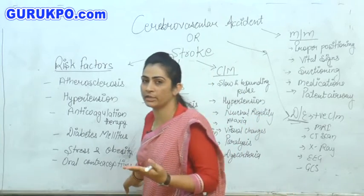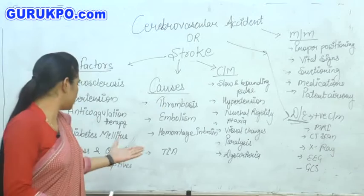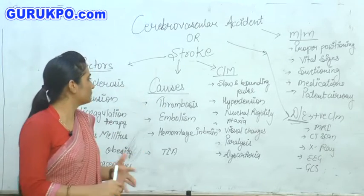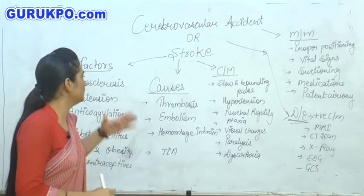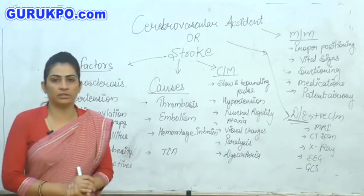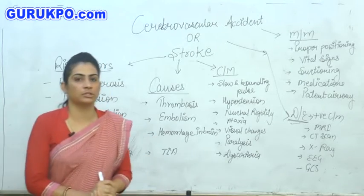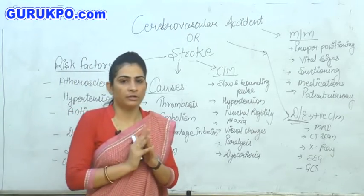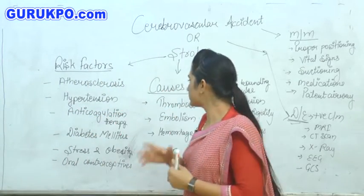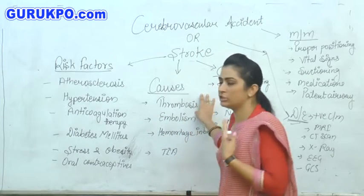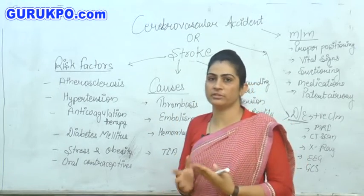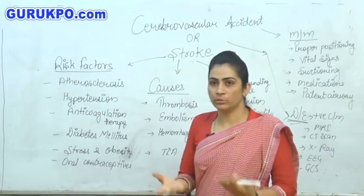Women who take oral contraceptives are also at risk of stroke. Next, I am going to describe the causes. First one is thrombosis — it is an abnormal accumulation of fat in the blood vessels of the body.